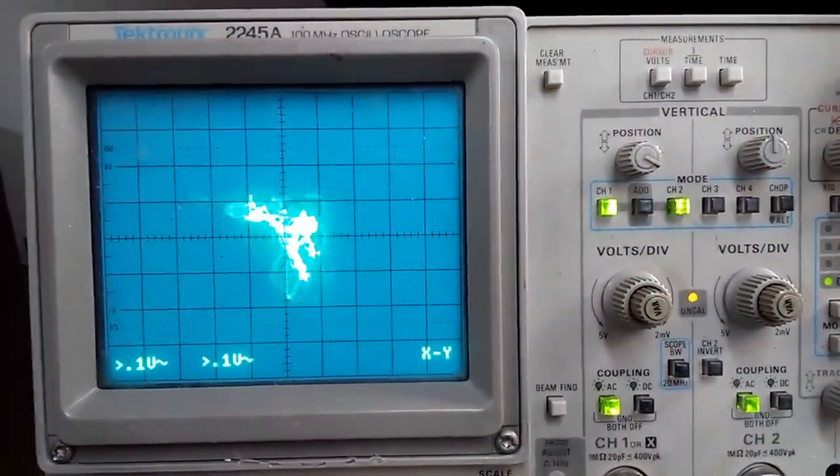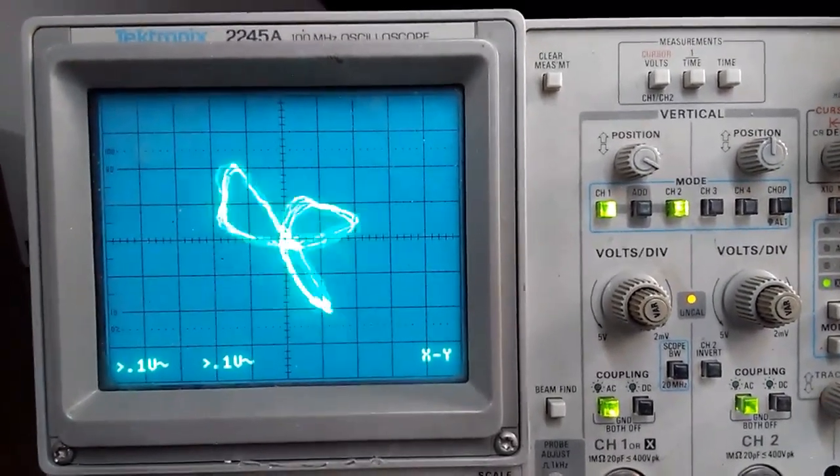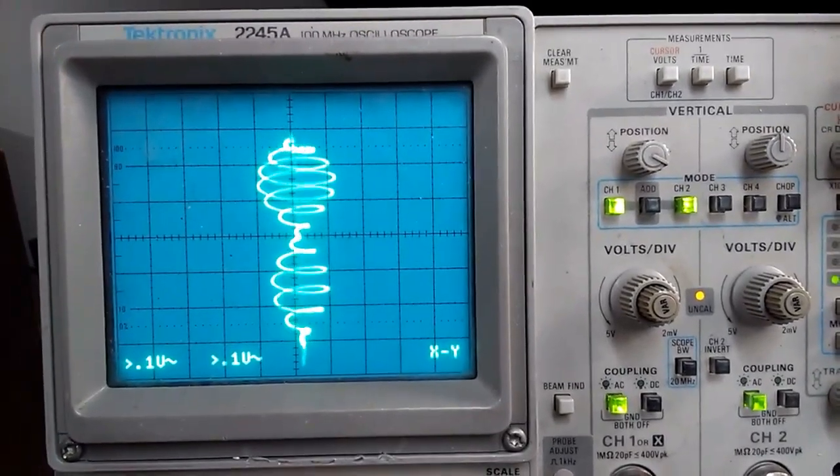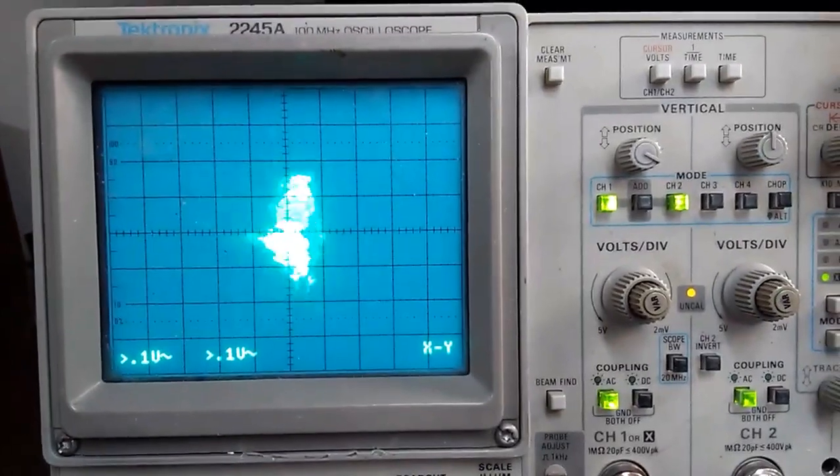To get this spiral into the shape of a mushroom, we need to multiply our left channel with a sine wave of the same frequency as the sawtooth. But we're only going to use the sine's last quarter.